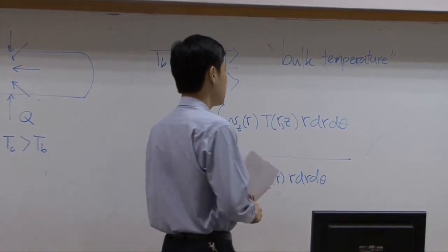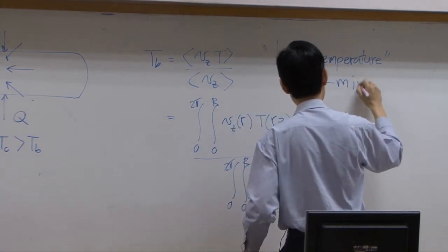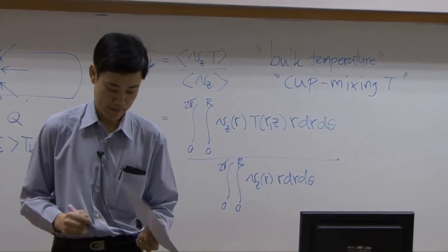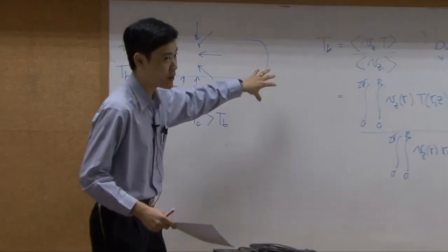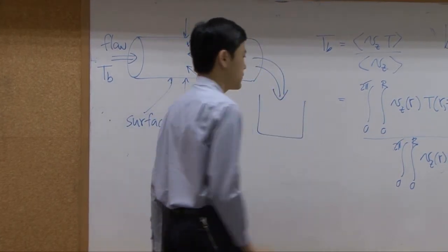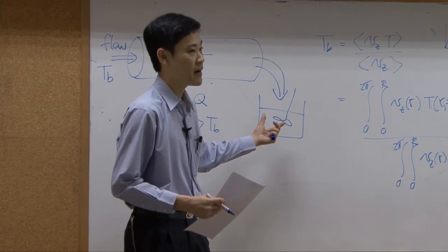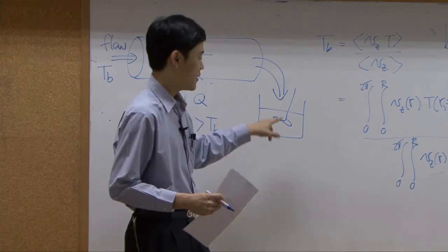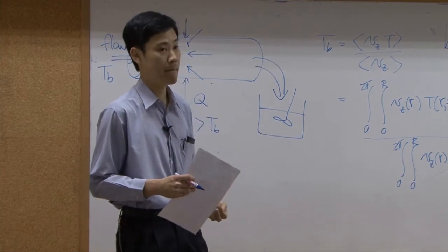This is sometimes called the cup mixing temperature. Cup mixing temperature means: suppose you have fluid flowing through the pipe downward into some container, and a stirrer mixes the fluid together so the temperature becomes uniform — that uniform temperature should equal the bulk temperature Tb.